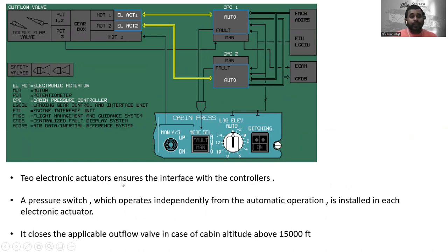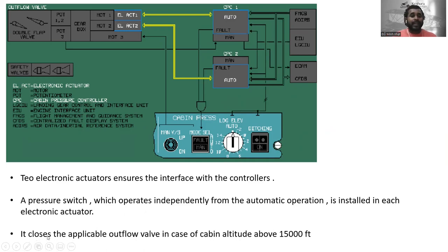Two electronic actuators ensure the interface with the controllers. A pressure switch, which operates independently from the automatic operation, is installed in each electronic actuator. This pressure switch closes the applicable outflow valve in case of cabin altitudes above 15,000 feet.